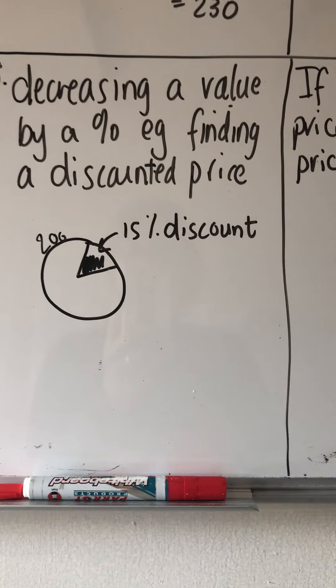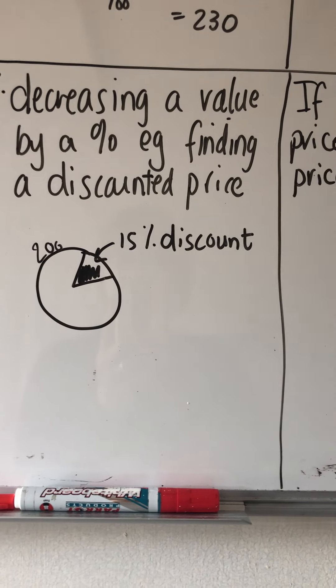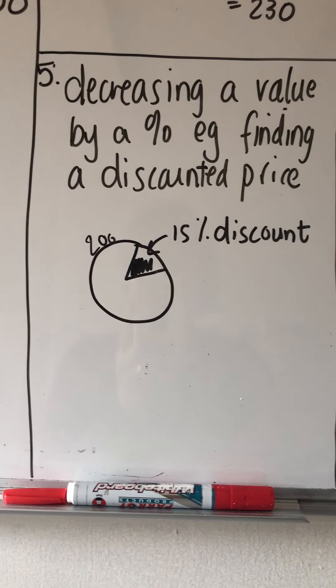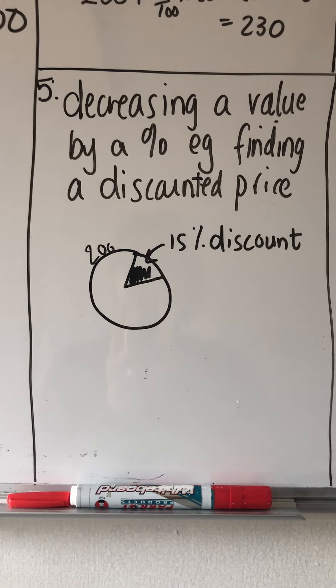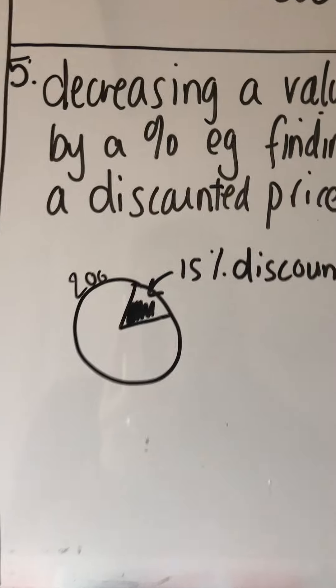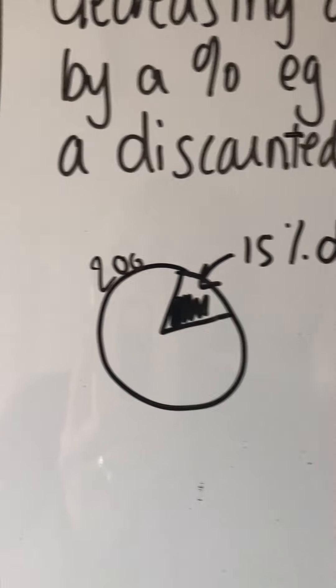Now most people will go 15% of 200 is 30 Rand, and they will minus it, and you will get the correct answer. So let's record that way of doing it.